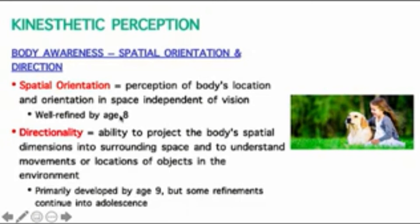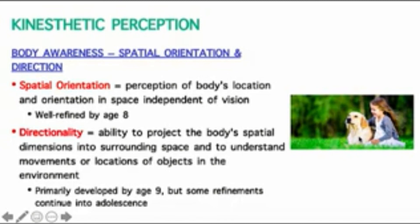We also have directionality, which is a person's ability to project the body's spatial dimensions into surrounding space and to understand the movement or locations of objects in the environment. This is usually developed by age nine, but some refinements continue through adolescence. For example, if you're facing a person, you're able to understand that the left side of their body is aligned with the right side of your body — understanding direction relative to other objects or environments that are interacting with you.